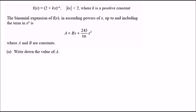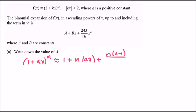The general binomial expansion formula: (1 plus ax) to the power n equals 1 plus n times ax plus n(n minus 1) over 2 factorial times (ax) squared, and so on. Since we only need up to x squared, we stop there.